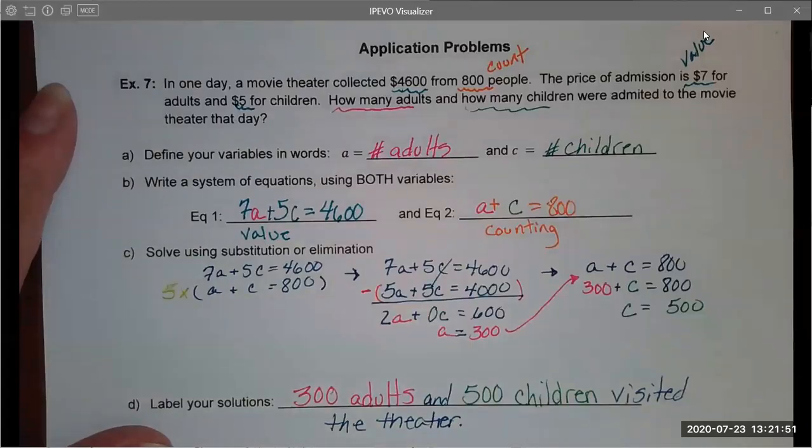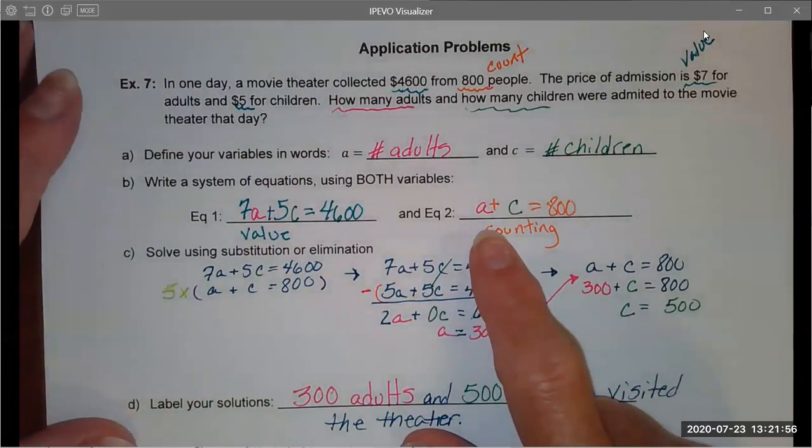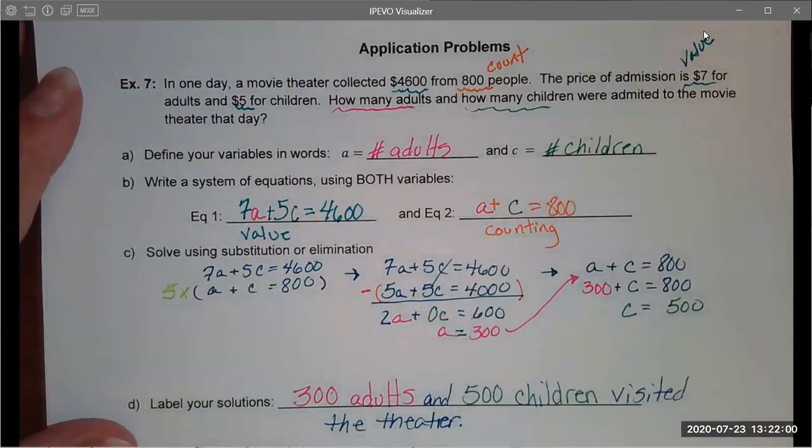Here's what I came up with. You could easily use substitution in this problem because the leading coefficient for both A and C in this equation is one, and that lends itself well to substitution. However, I chose to use elimination.